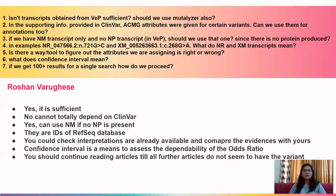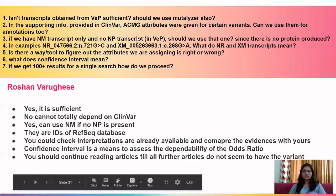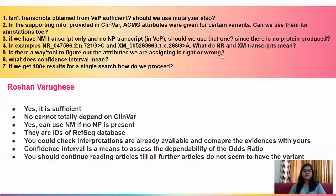Third question: if there is only an NM transcript and no NP transcript, use whatever is available. Regarding NR and XM transcript IDs — these are RefSeq database IDs; refer to the RefSeq database for more details. Fourth: is there a tool to verify that the attributes we are assigning are correct? There is no such tool, but if already available annotations exist, compare yours with them to see if you are going in the same direction or assigning contrasting attributes. Fifth: what does confidence interval mean? It is a means to assess the dependability of the odds ratio — like a significance or p-value given to the odds ratio.